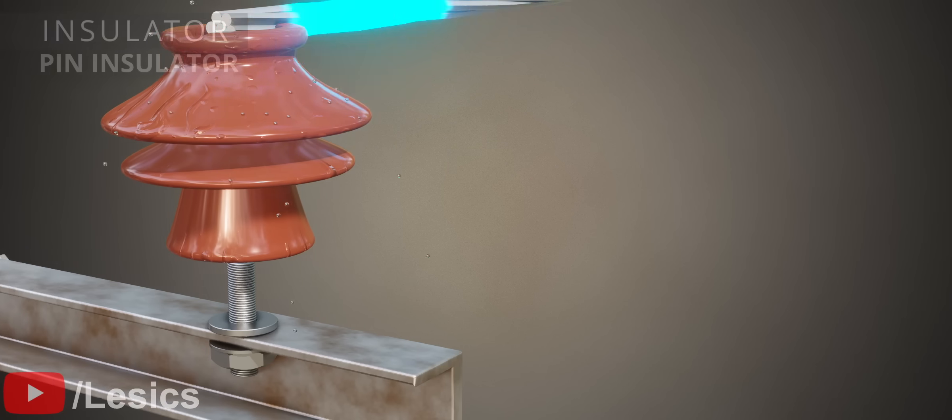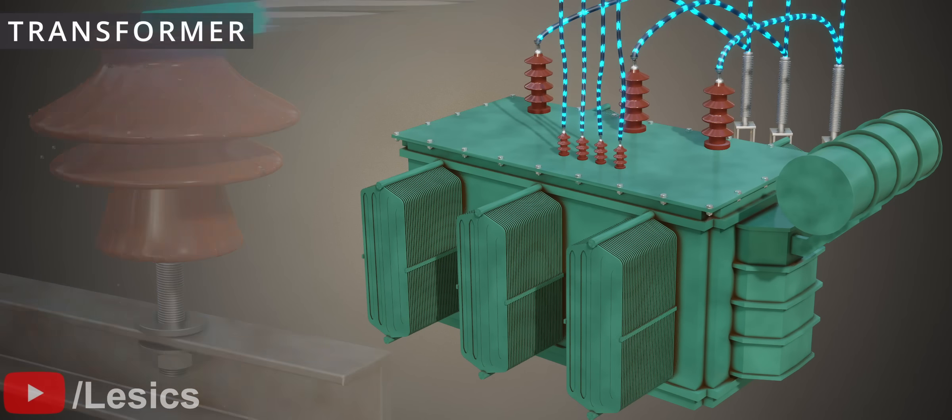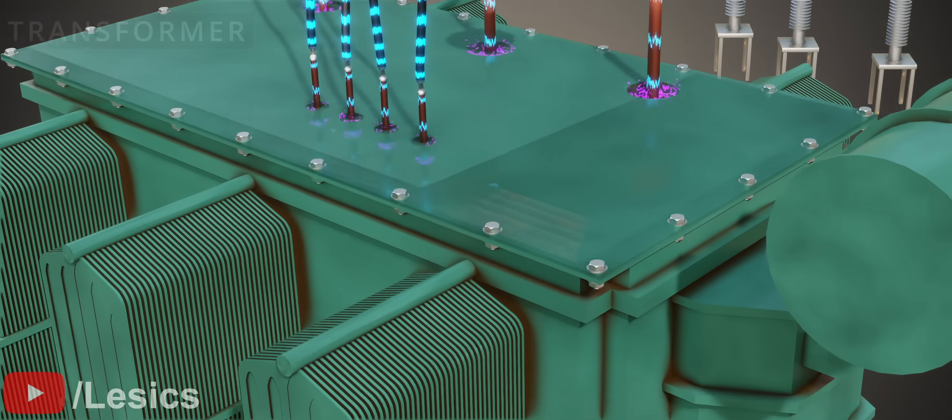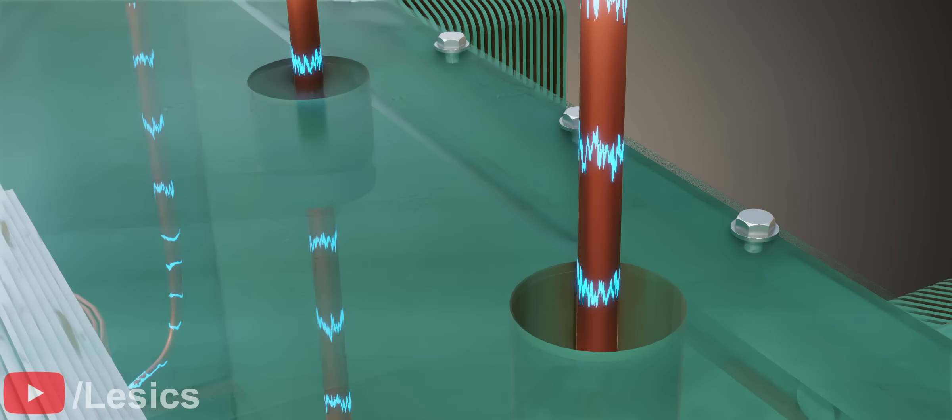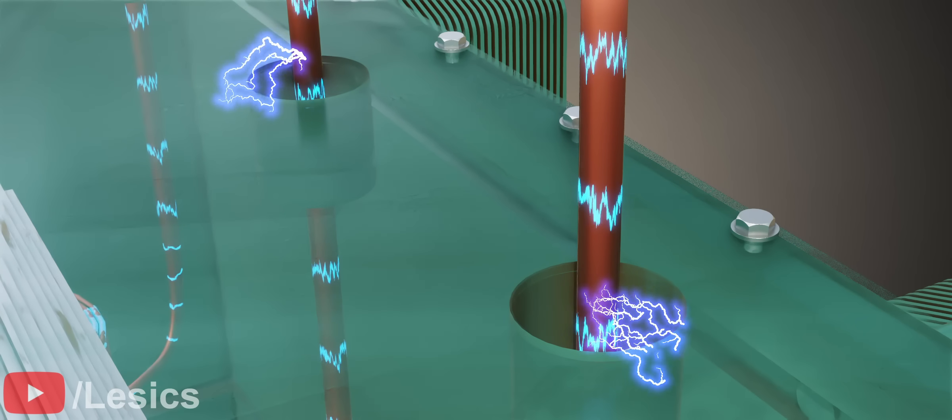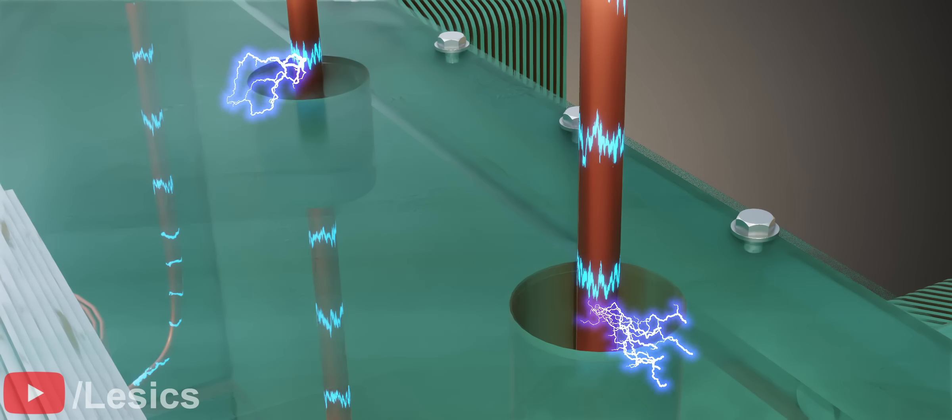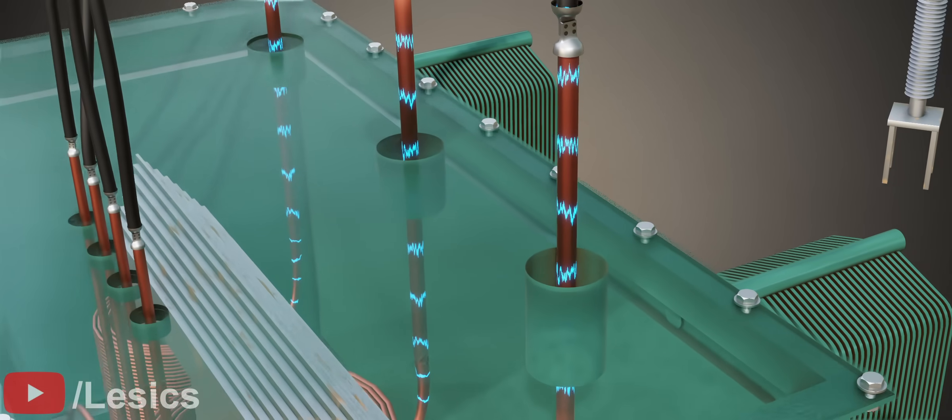You must have seen similar types of insulators on top of the transformers. But why do transformers need insulators? You can see what will happen in the transformer if the insulators are not used. There will be arcing between the high-voltage power line and the low-voltage transformer body. Thus, the conductor should be isolated from the body of the transformer.